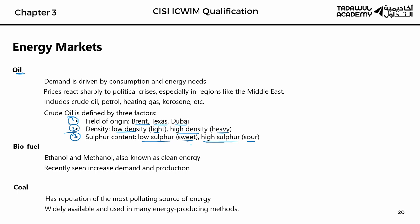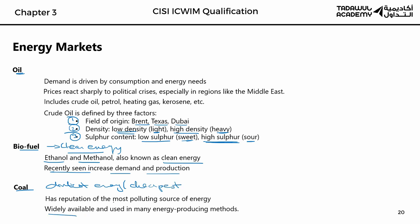Exam questions on oil might ask: what does 'sour and light' mean? Sour means high sulfur, and light means low density. Alternatives to oil include biofuel — ethanol and methanol — known as clean energy, which have recently seen an increase in demand and production. We also have coal, which is considered the dirtiest energy but also the cheapest, and it is widely available and used in many energy-producing methods.